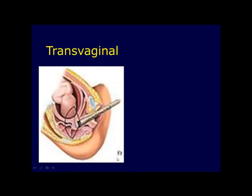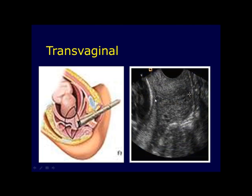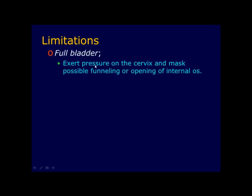In the transvaginal technique, a clean transvaginal probe covered by a condom is inserted three to four centimeters into the vagina to avoid compression of the cervix and to image it within the effective focal zone of the transducer. The patient should have an empty bladder. A sagittal, long-axis view of the endocervical canal is obtained, and cervical length is measured from the internal os to the external os along the endocervical canal. Even with transvaginal technique, limitations include a full bladder, which can exert pressure on the cervix and mask possible funneling or opening of the internal os.